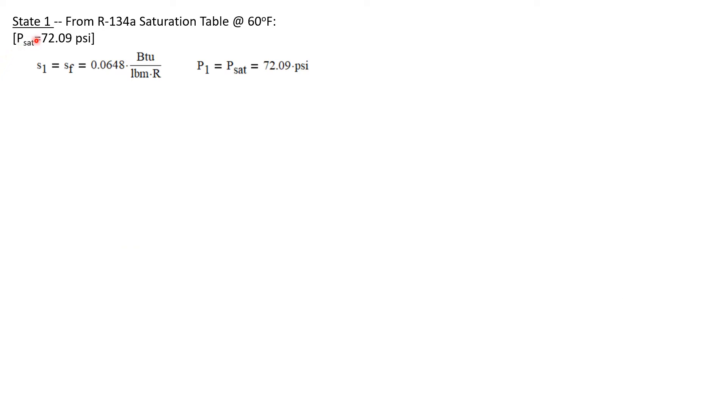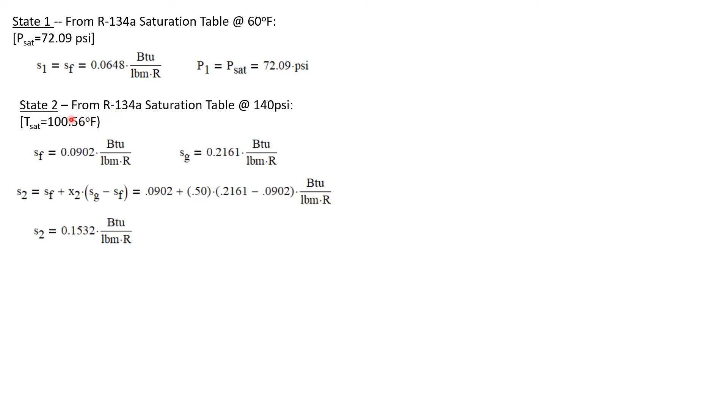Let's get some table properties for state one. We'll go to the R-134a saturation table at 60°F and this is where we know that the saturation pressure at state one is 72.09 psi. So P₁ is the saturation pressure, it's 72.09 psi, and from the table we'll get the value of specific entropy at state one. It's just s_f because state one is a saturated liquid, and that's 0.0648 Btu/(lbm·R).